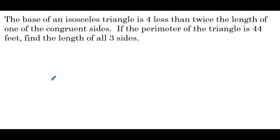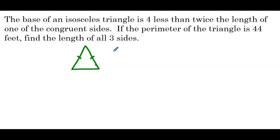Next question: the base of an isosceles triangle is 4 less than twice the length of one of the congruent sides. If the perimeter of the triangle is 44 feet, find the length of all three sides. Let's start with a picture. In an isosceles triangle, two sides are equal, and the base is the side that's not equal to the other two. We'll define one congruent side as x, so the other congruent side is also x. The base is 4 less than twice the length: twice the length is 2x, and 4 less than that is 2x minus 4.